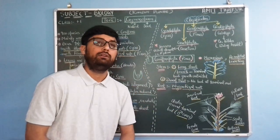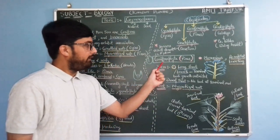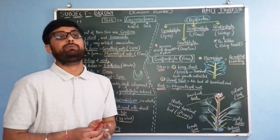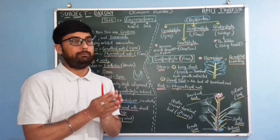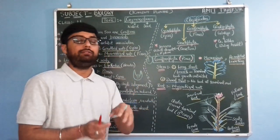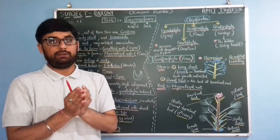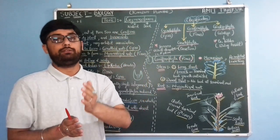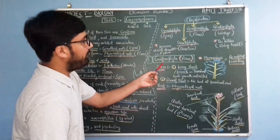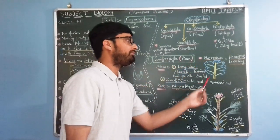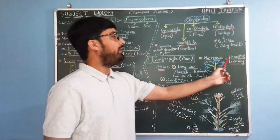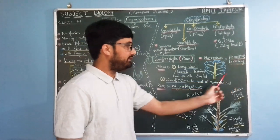Coniferophyta, or Pinus, is monoecious — meaning male and female reproductive structures are present on the same plant body. When a plant is dioecious, male and female structures are on different plants. Pinus is monoecious, with both male and female reproductive structures on the same plant. They also exhibit acropetal type of branching.